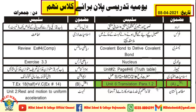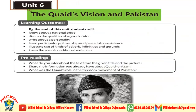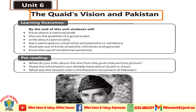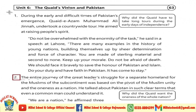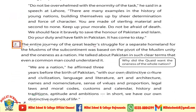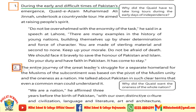For the translation, please open your English textbooks. Chapter six is named 'The Kite's Wean and Pakistan.' Now move on to the transition. You will do paragraph number one and two, which starts from 'During the early and difficult time of Pakistan' and ends at 'distinctive outlook of life.'